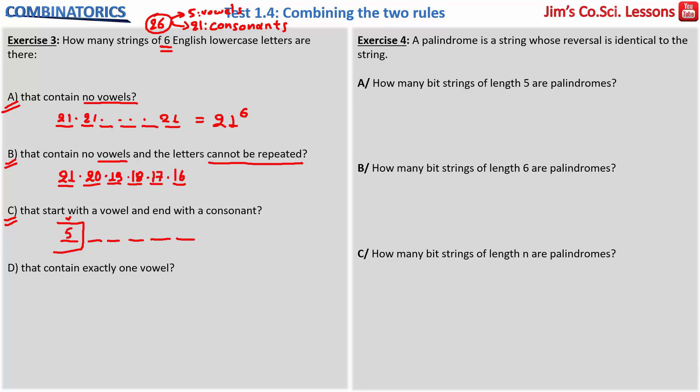So the first place must be filled with a vowel, and the vowels are 5, so there are 5 available options for filling this position. And in the last position they must end with a consonant, so there are 21 available options for it.